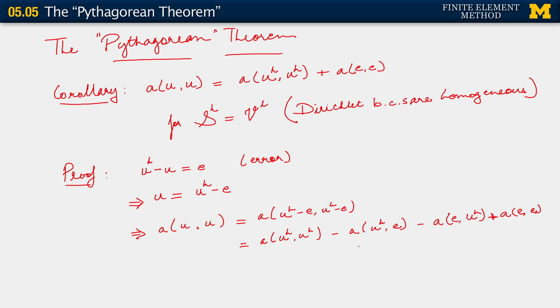And then as before, we recognize that the second and third terms are the same, because of the fact of symmetry of the bilinear form. So that let's write it as a(u_h, u_h) minus twice a(u_h, e) plus a(e, e).